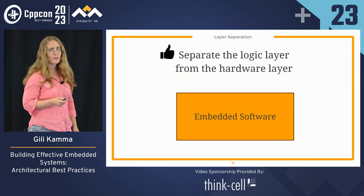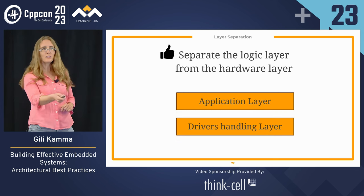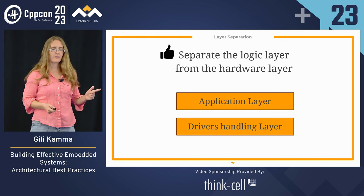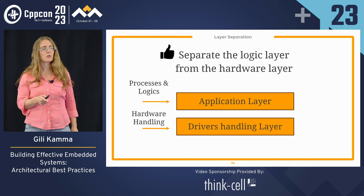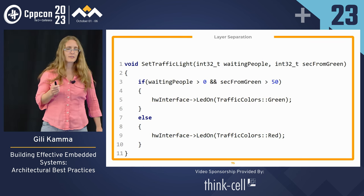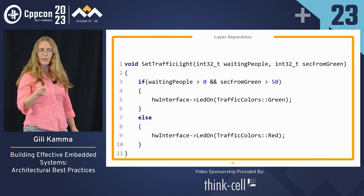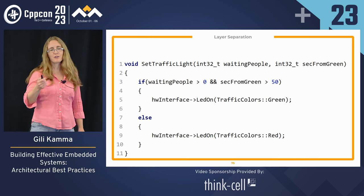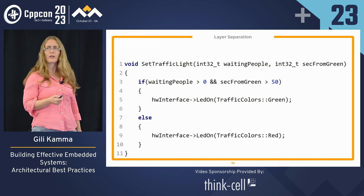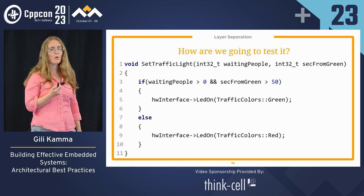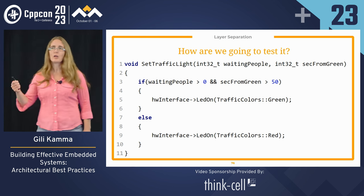Layer separation: separate the logic layer from the hardware layer. We have a big block of embedded software that I want to split into two layers: an application layer responsible for processes and logic, and a driver handling layer responsible for hardware. Let's look at this function — set traffic light — very simple. The input is how many people are waiting and seconds since last green, and the output is void. If at least one person is waiting and it's been more than 50 seconds since last green, we tell the hardware: LED on, green. Otherwise: LED on, red. Very simple function. So how are we going to test it? It's a little bit problematic because of the mix between logic and hardware.